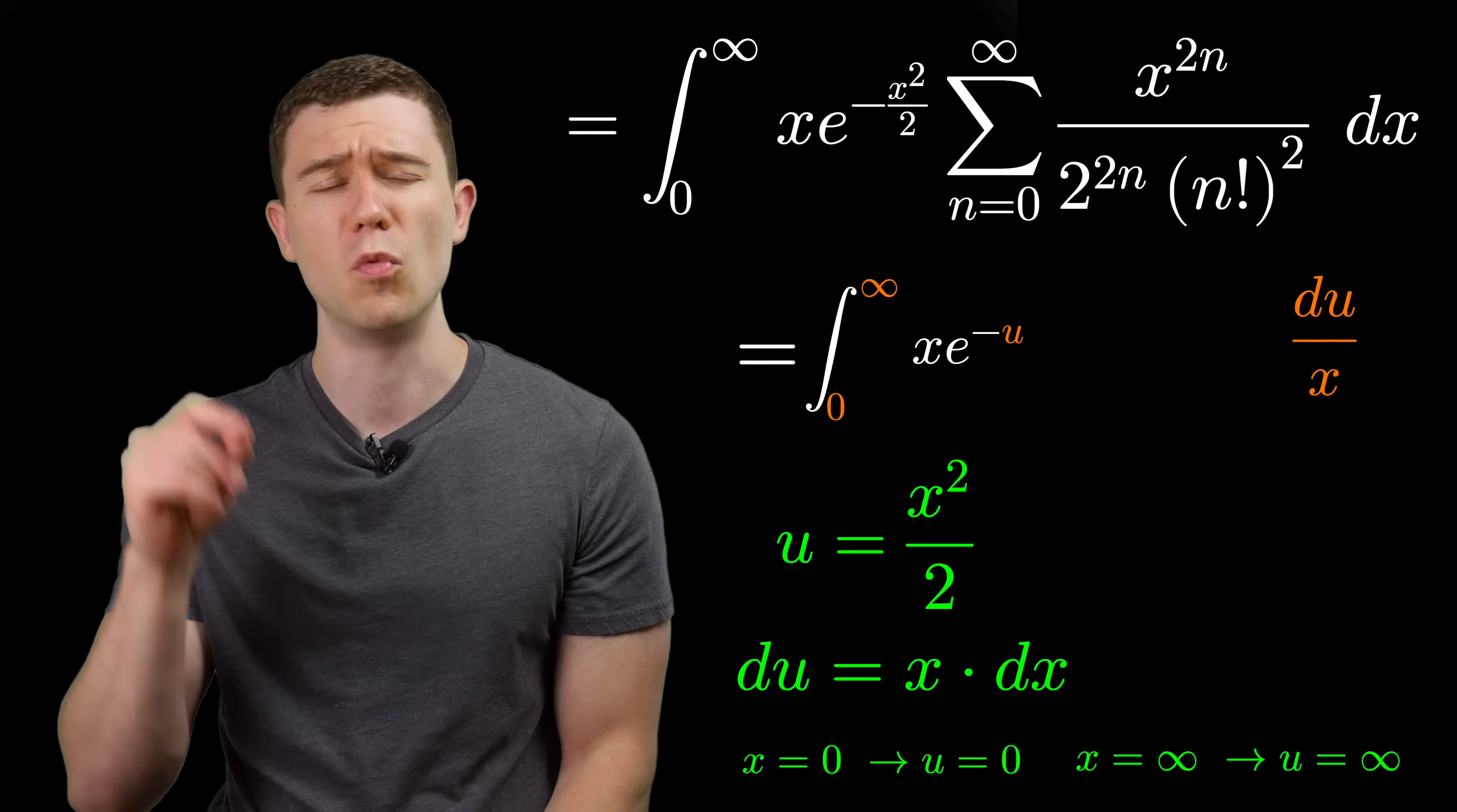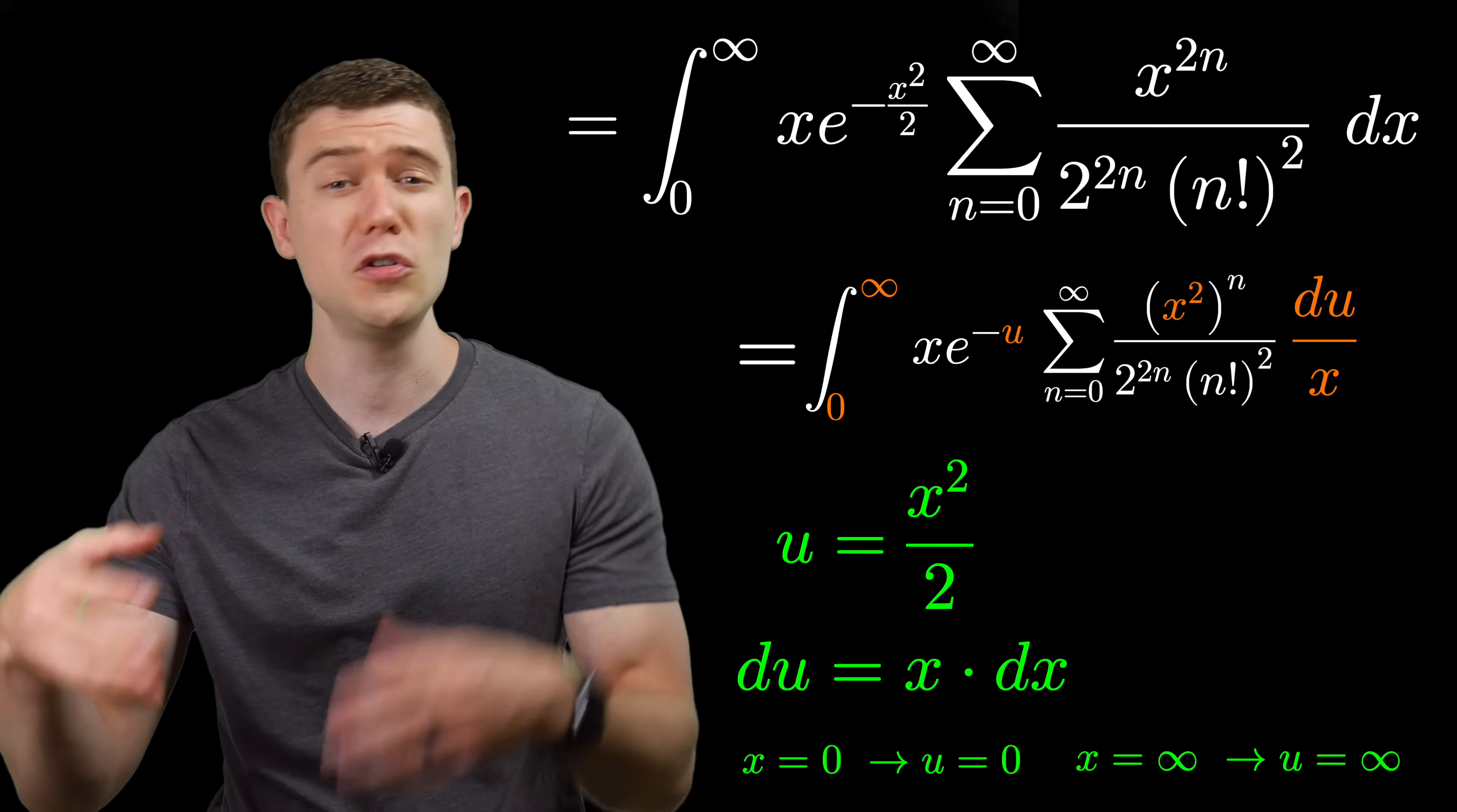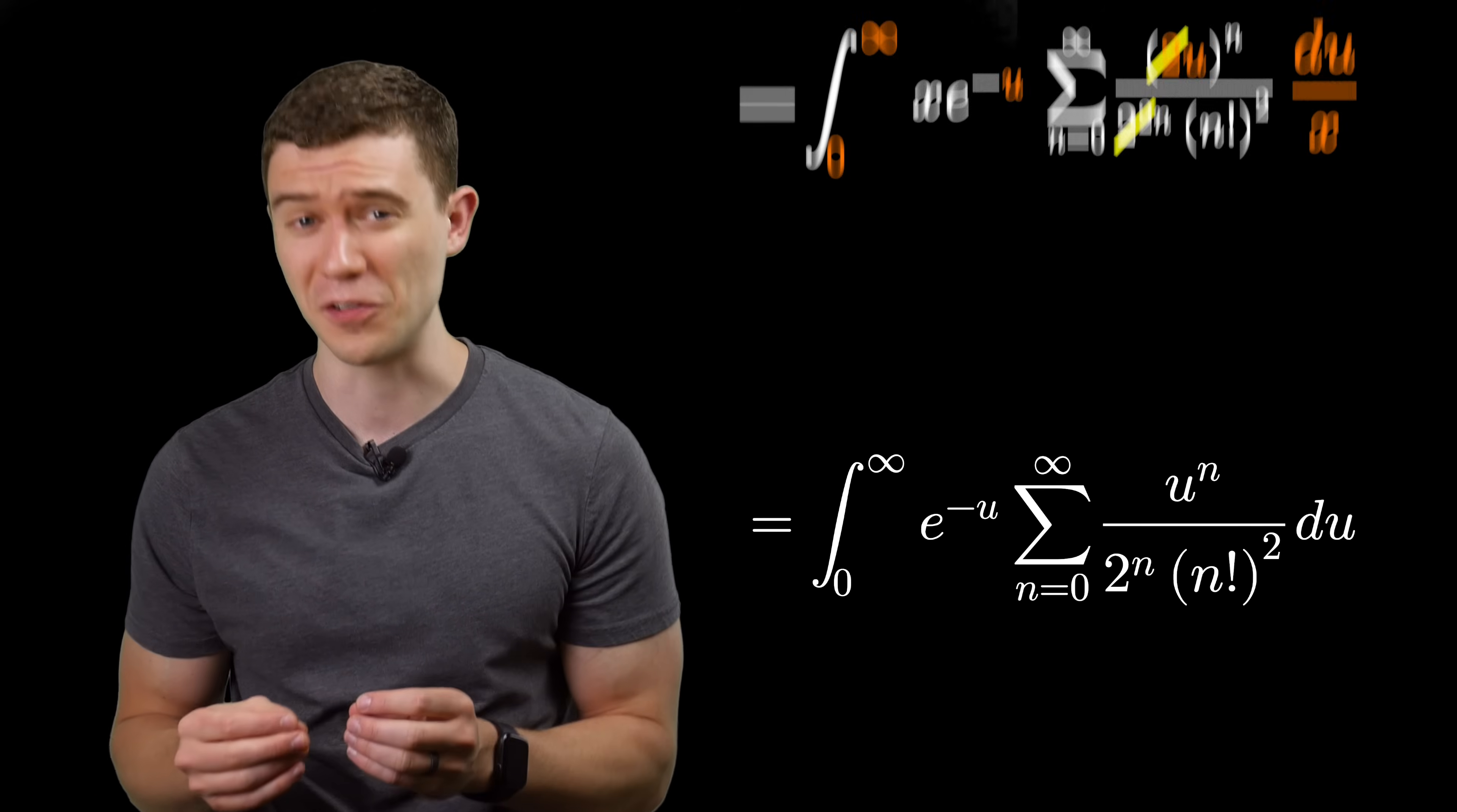Let's find out what x is in terms of u. In fact, here's a nice little trick. Since we have x to the 2n, let's just write that as x squared all to the n, because we can rewrite our substitution in terms of x squared. Just take our substitution, multiply both sides by 2, and we'll see that 2u is equal to x squared. Substitute that into this infinite sum. Maybe you'd like to take a second and cancel the 2 to the n in the numerator with one of the 2 to the n's in the denominator, and we're getting a little bit closer.